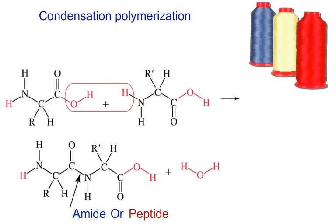Condensation polymerization is very similar to addition polymerization. In this example right here, we have an amine group and a COOH acid group — this is actually an amino acid. From the living environment, amino acids are used to synthesize protein and also create DNA.